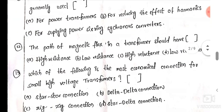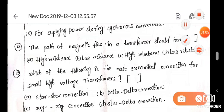The path of magnetic flux in a transformer should have low resistance, high resistance, high reluctance, or low reluctance? The magnetic flux is low reluctance, high permeability.